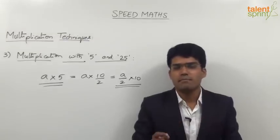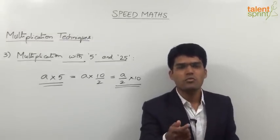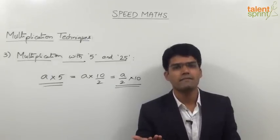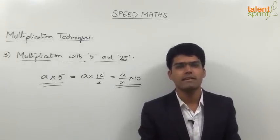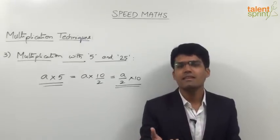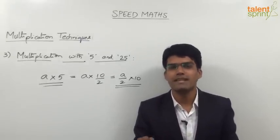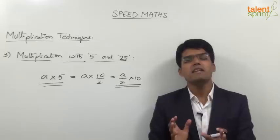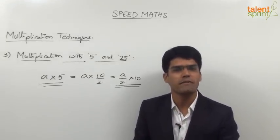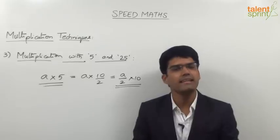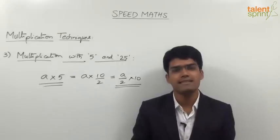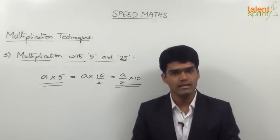Let us take a few more examples. 12 into 5: half of 12 is 6, so 6 into 10 is 60. 14 into 5: 7 into 10 is 70. 18 into 5: 9 into 10 is 90. 16 into 5: 8 into 10 is 80. So this is how multiplication with 5 becomes a really simple job. 24 into 5 is 120. 36 into 5 is 180 — because half of 36 is 18, into 10 is 180.